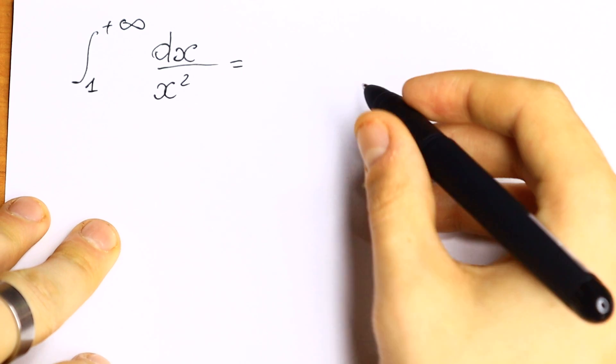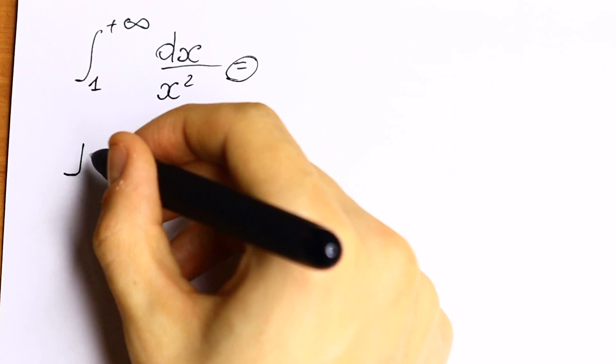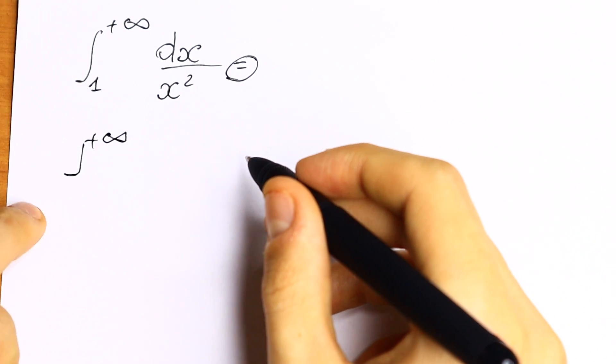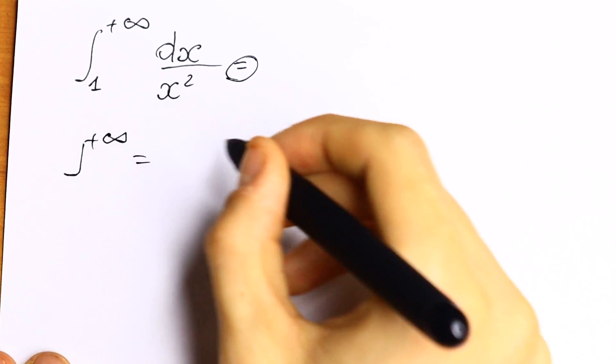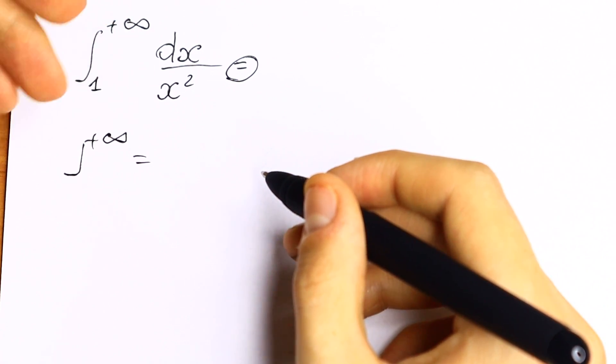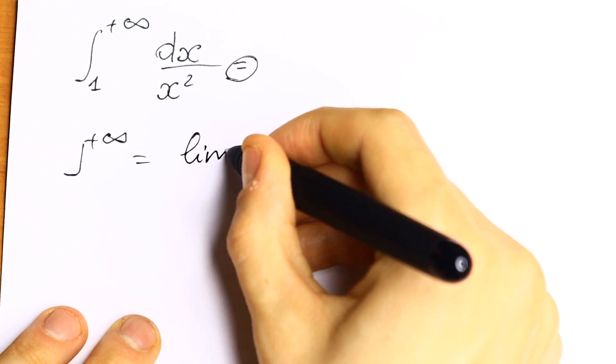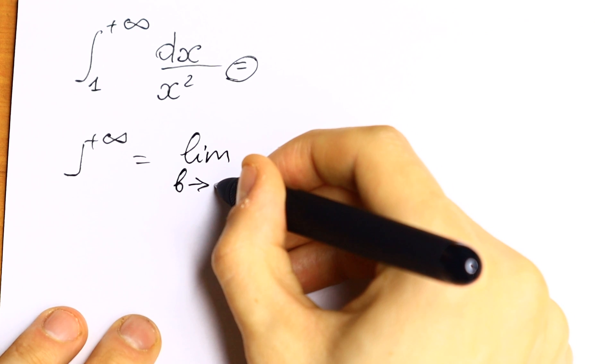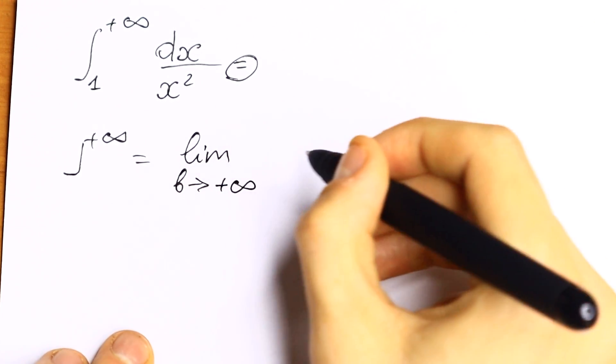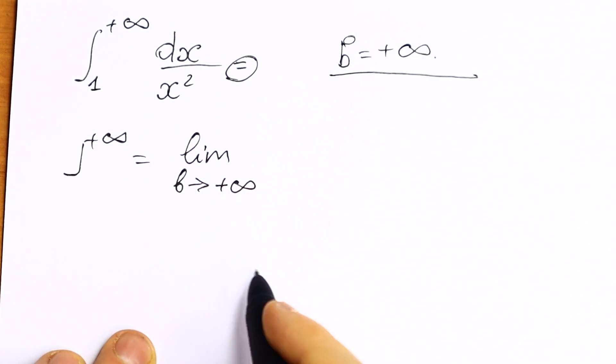So how can I solve it? Take a look. We can write this integral as b goes to plus infinity. As a result, if we need to find information about this integral converging or diverging, we need to write this integral as limit b approaches plus infinity. First of all, you need to write that b equals plus infinity, this substitution.